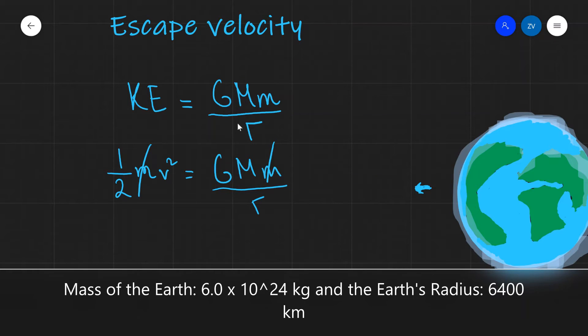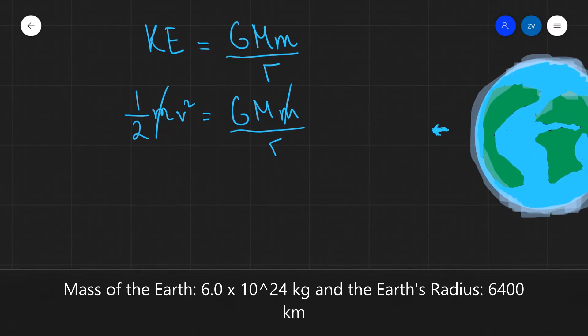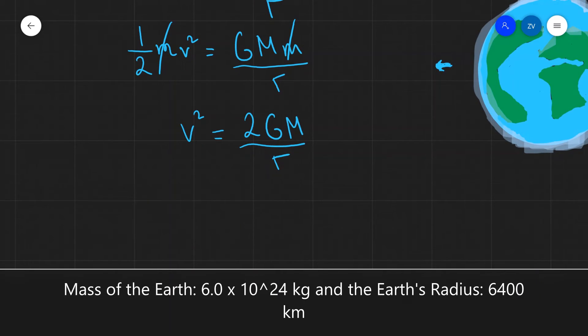It only depends on the mass and size of the planet we're trying to escape. Let's rearrange for v, our escape velocity. v² equals 2GM/r, and taking the square root, our escape velocity equals √(2GM/r).